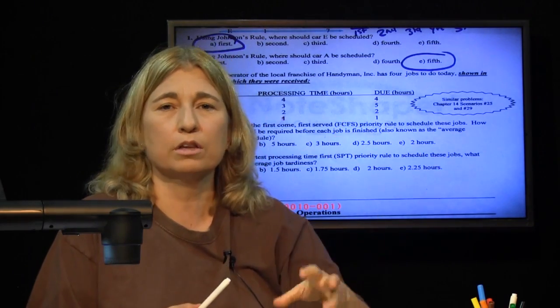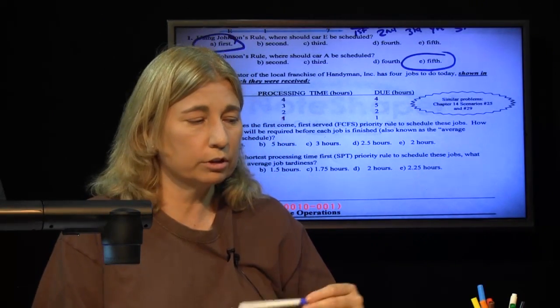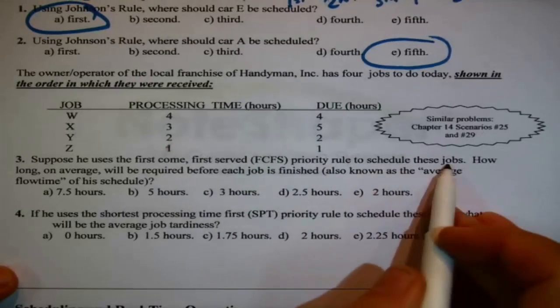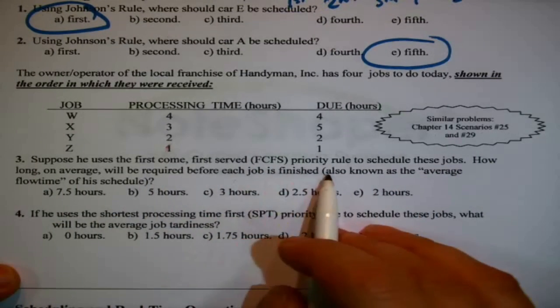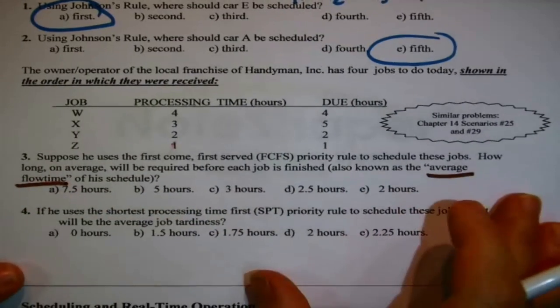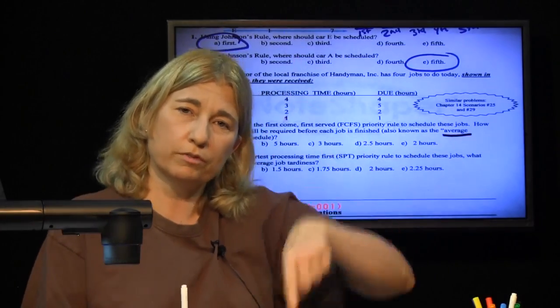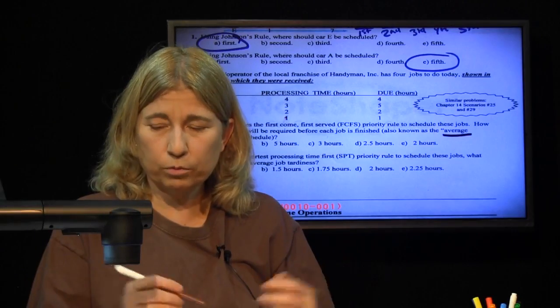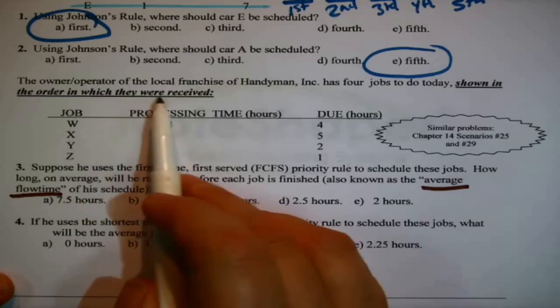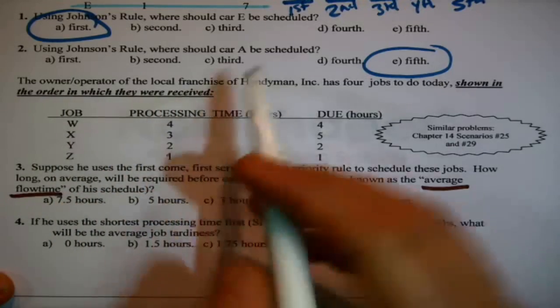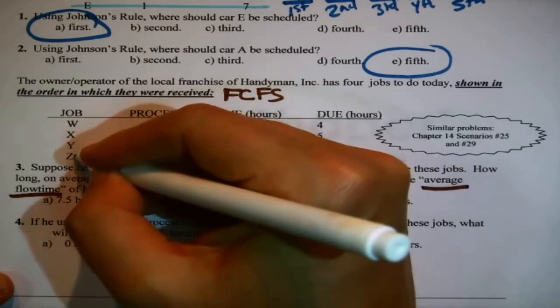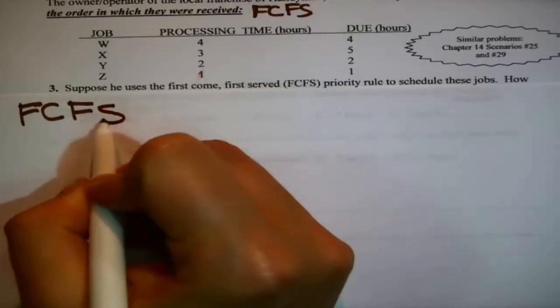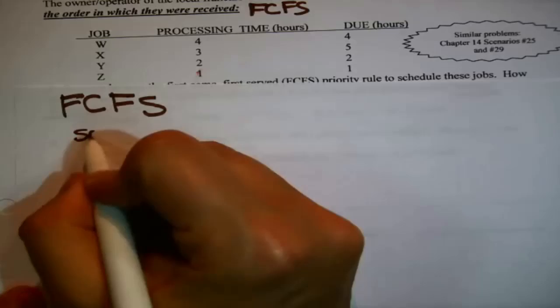There's just these things that need to be done and the only thing we know is how long will they take. In single work center problems, they're generally pretty simple. We just want to stay organized so we don't confuse ourselves. First question, suppose he uses first-come, first-served priority rule to schedule these jobs. How long on average would be required for each job to be finished? Also known as the average flow time. To answer that question, first we have to come up with the sequence, like the schedule, and then we have to calculate the flow times and then we have to average the flow times. First-come, first-served. That's why this was bold and italics and underlined, shown in the order they were received, that is first-come, first-served, if we work through them in that order.